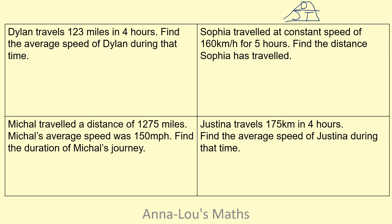So this first one: Dylan travels 123 miles in four hours — find the average speed. We're looking for speed, so speed is distance divided by time: 123 divided by four. If I do that on my calculator, I end up with 30.75 miles per hour.